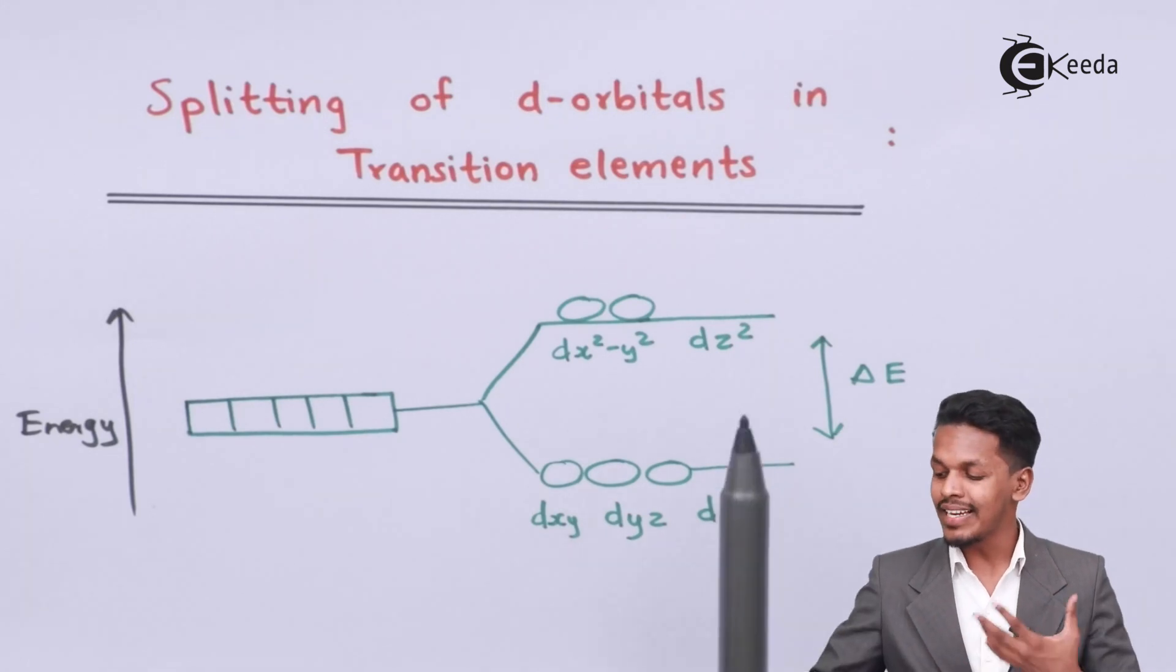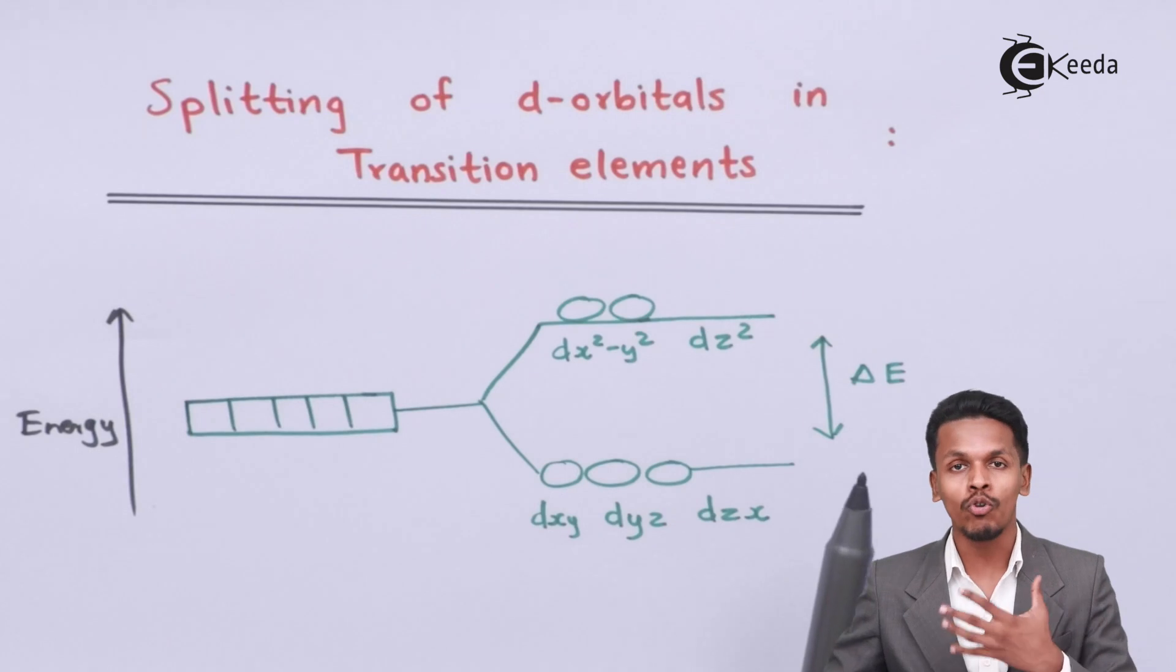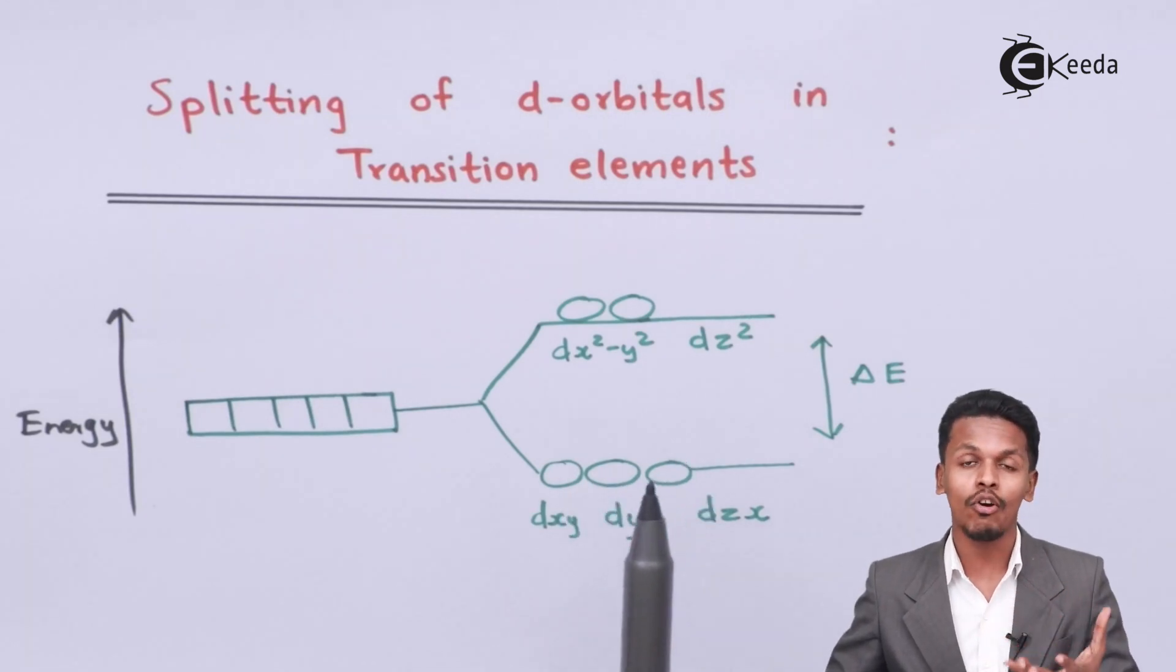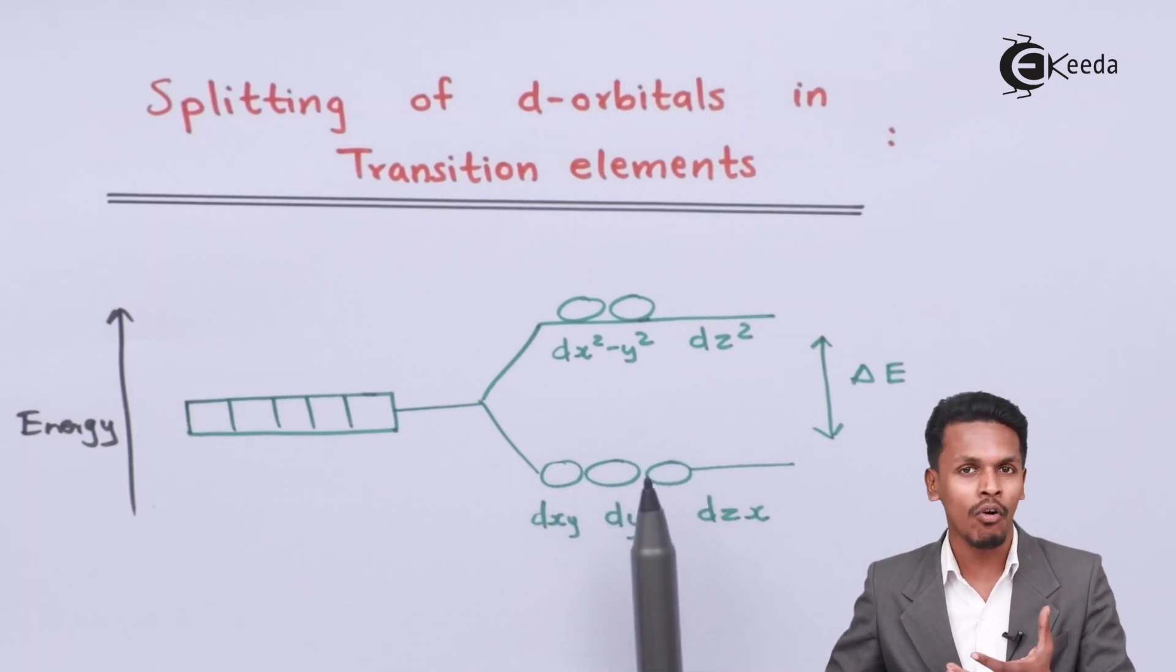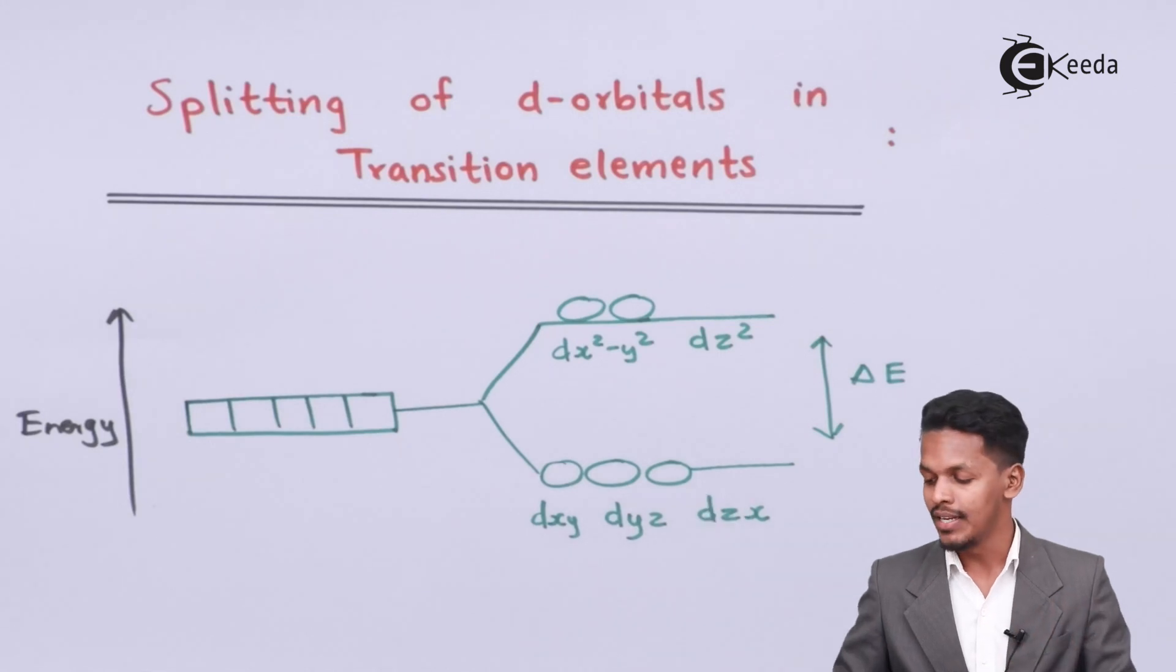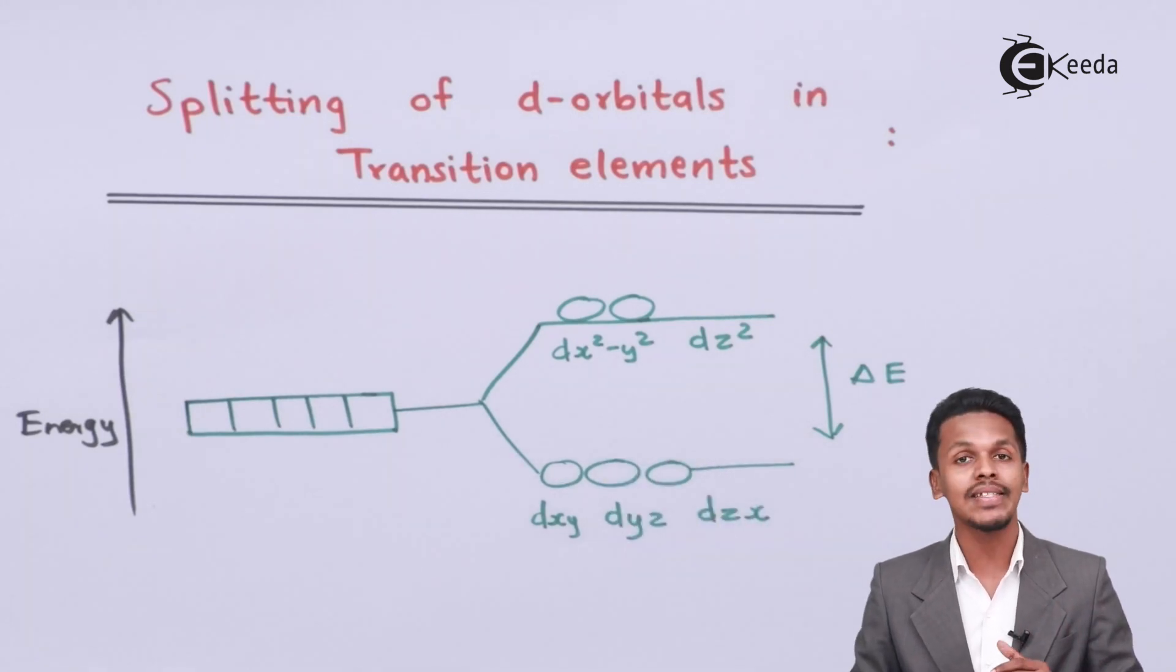The energy level can increase or decrease depending on the group that is associated with the d orbital, and this is how a covalent or metallic bond is formed. So this is the splitting of d orbitals.